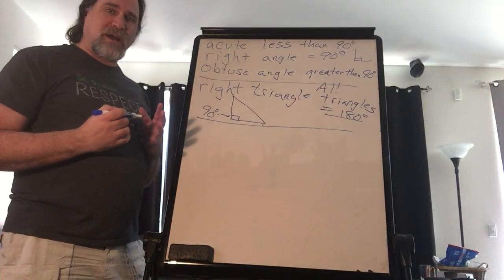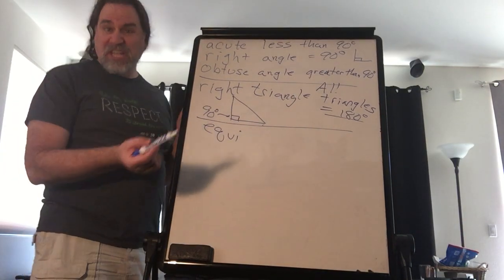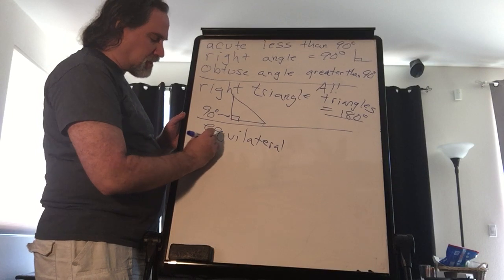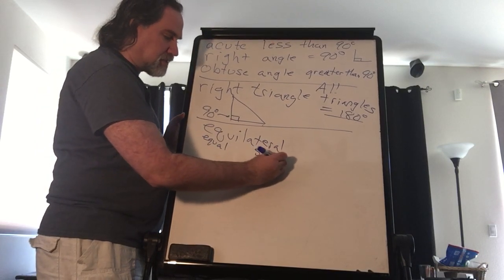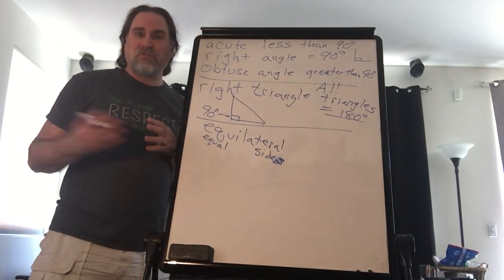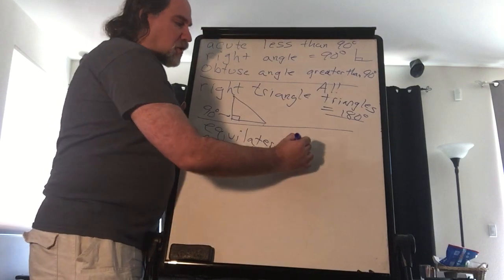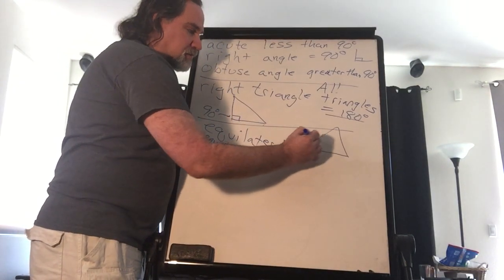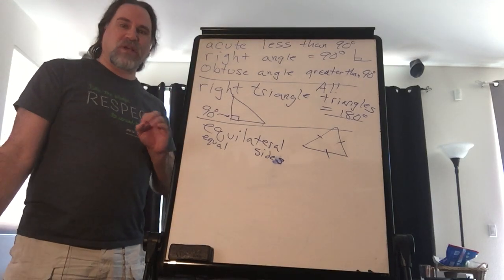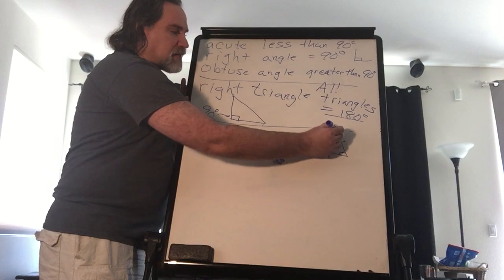The next triangle we want to talk about is one that's called equilateral. Equa meaning equal, and lateral meaning sides. So this is equal sides. If you're a football fan like myself, when they throw the ball sideways they call it a lateral. So equilateral, that means that all the sides in the triangle are equal. They're all exactly the same measurement, inches, feet, doesn't matter, but they're all the same.